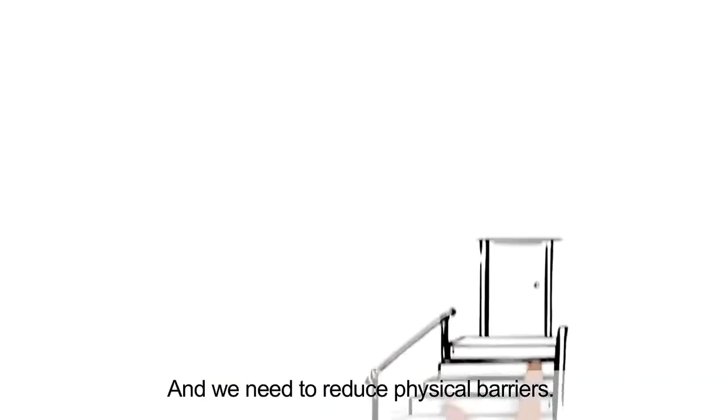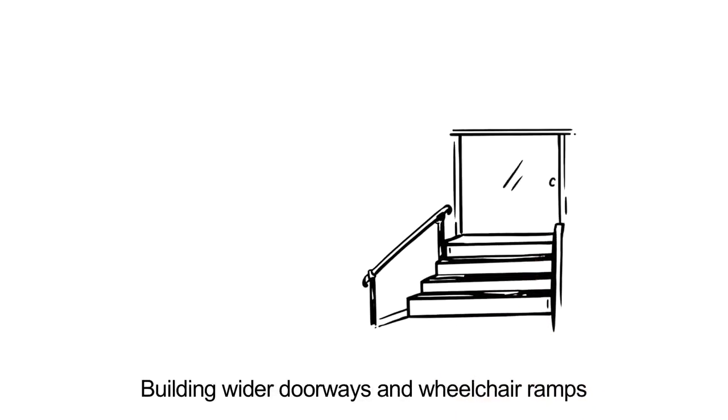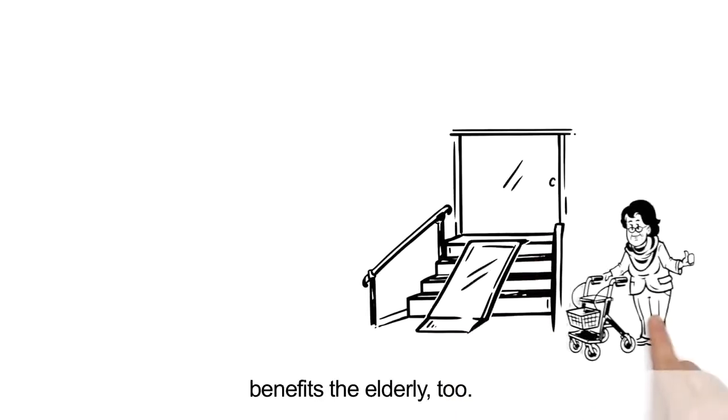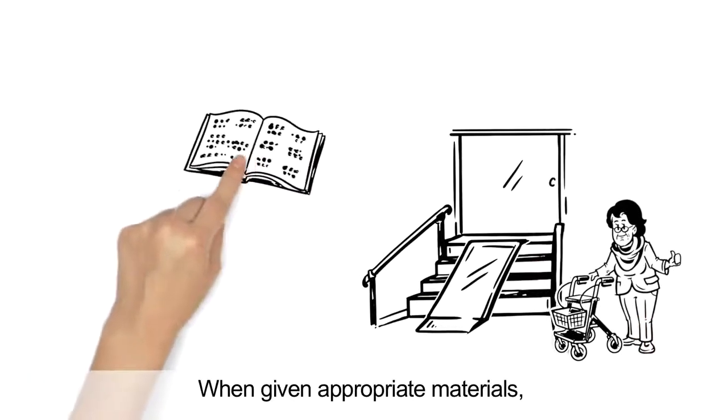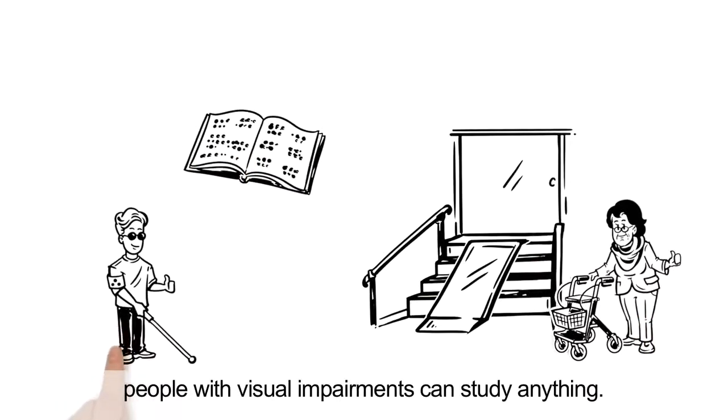And we need to reduce physical barriers. Building wider doorways and wheelchair ramps benefits the elderly too. When given appropriate materials, people with visual impairments can study anything.